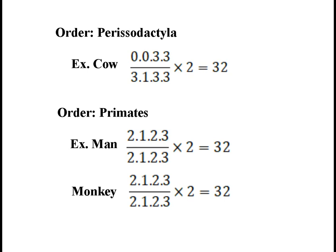In order Primates, for example man: 2 incisors, 1 canine, 2 premolars and 3 molars are present in one half of the upper jaw, and 2 incisors, 1 canine, 2 premolars and 3 molars in one half of the lower jaw. Multiplying by 2 gives a total of 32 teeth. In monkey, one half of each jaw has 2 incisors, 1 canine, 2 premolars and 3 molars, also giving a total of 32 teeth.